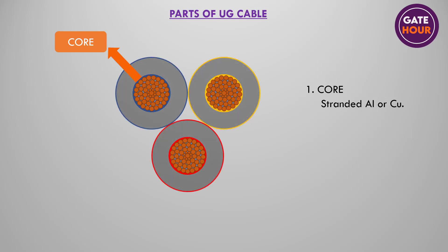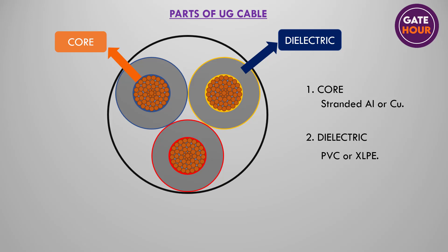The second part of a cable is a non-conducting material which insulates the cores from each other and from earth. PVC and cross-linked polyethylene, or XLPE, are widely used as dielectrics in underground cables.